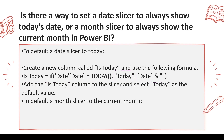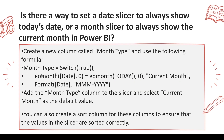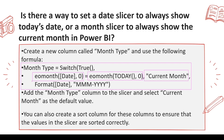Similarly, you can create a month type column for the current month. The logic: if the end-of-month date of the current date equals the end-of-month of today, push all dates in that month to a single label called 'current month.' Otherwise, format the date as a month-year value using a month year column. This column also needs to be sorted on a month-year sort column to work perfectly.